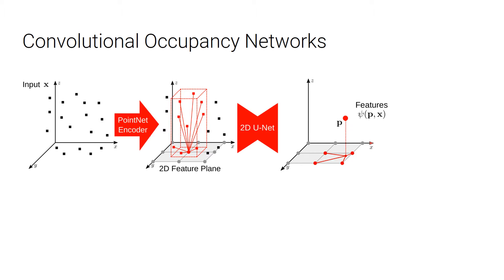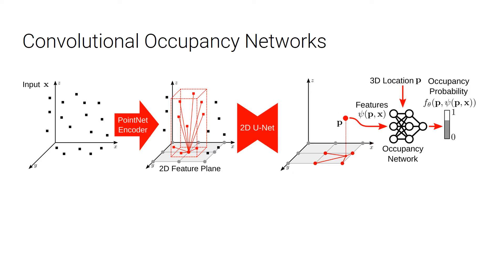We then use a UNet to further process the feature plane, which integrates the inductive biases into the model. Then, we sample the feature for each query point. Finally, we use another network to predict the occupancy of the query point.